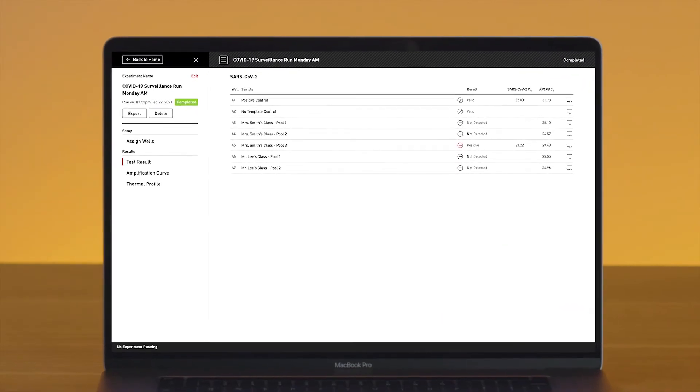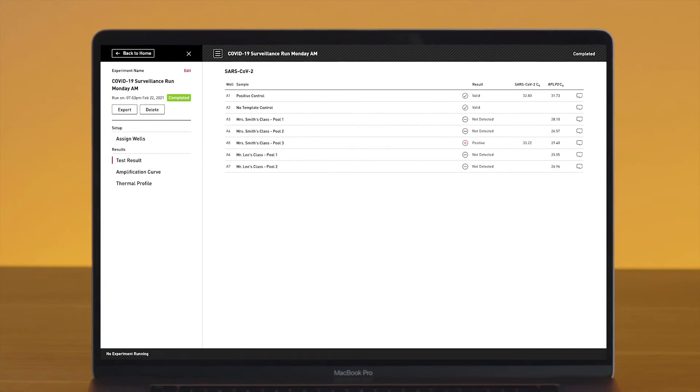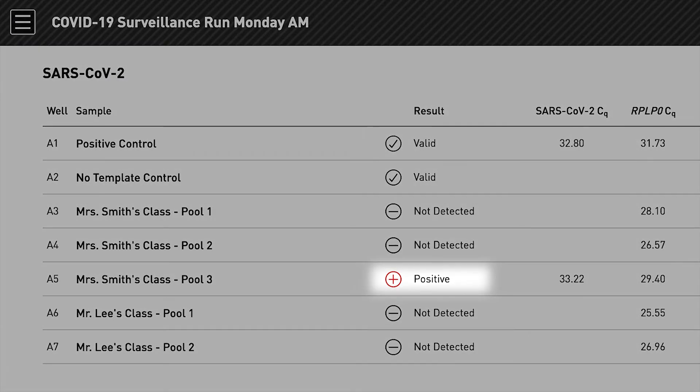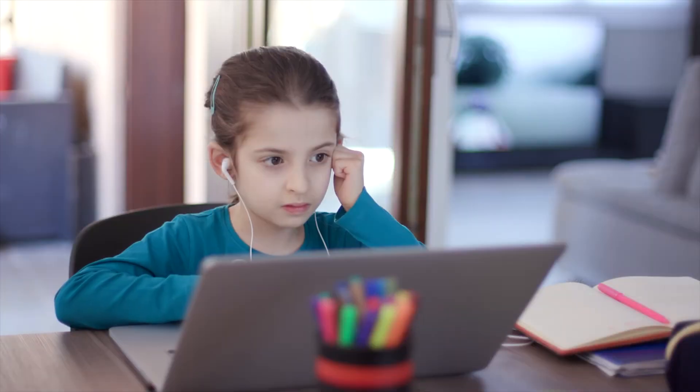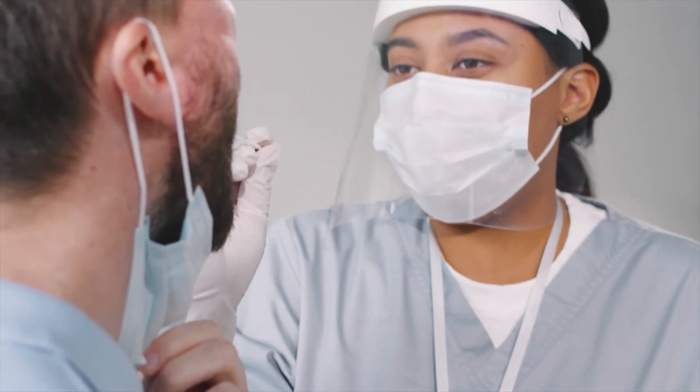You'll get clear, accurate results in about an hour. If COVID is detected, you can take targeted action, like suspending group interactions or referring people for diagnostic testing.